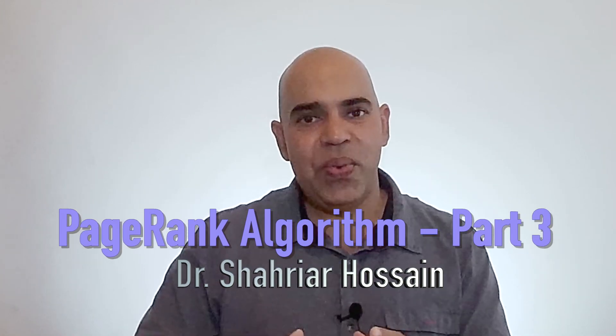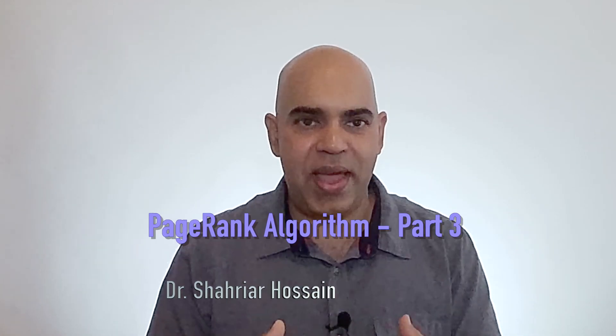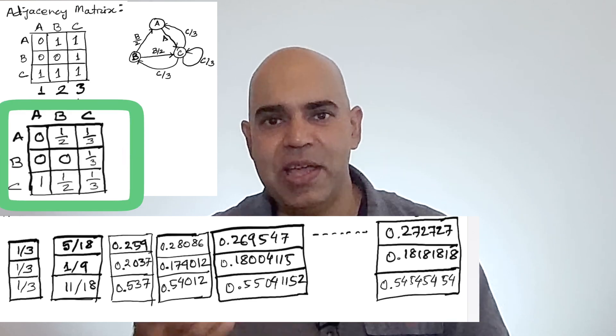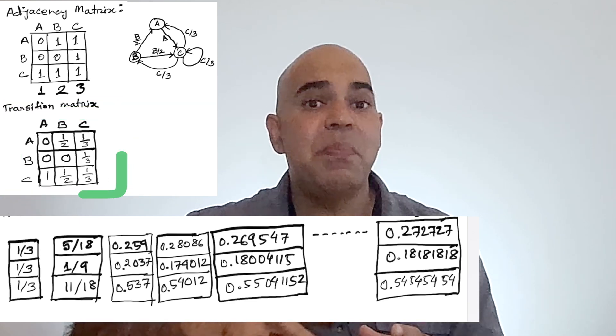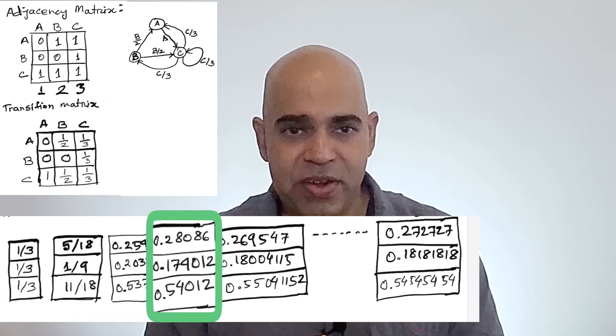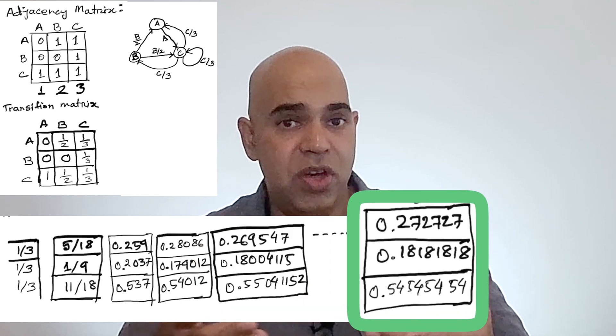In the previous video we executed the page rank algorithm by multiplying the hyperlink transition matrix by the latest page rank vector until the rank vector converged. Today we will do a deeper analysis, discuss what the page rank algorithm has to do with the search engine, and then bring up the topic of a potential issue with the page rank algorithm.